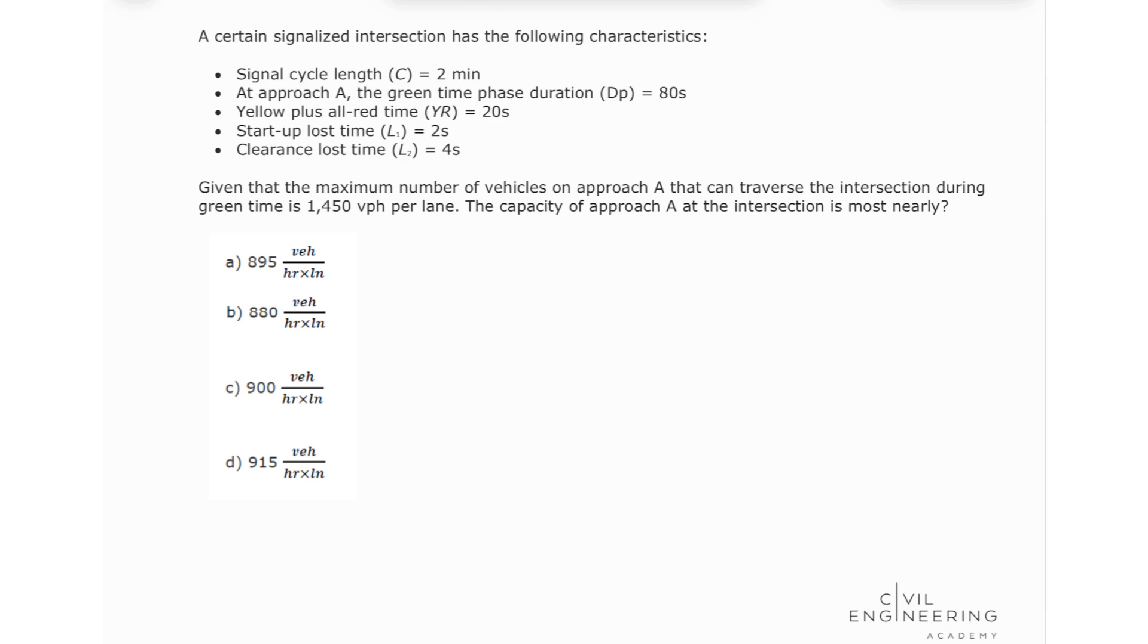Given that the maximum number of vehicles on approach A that can traverse the intersection during green time is 1,450 vehicles per hour per lane, the capacity of approach A at the intersection is most nearly.